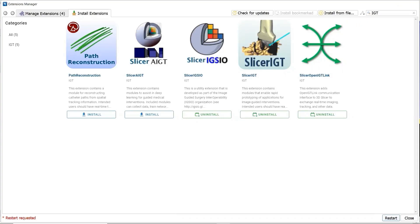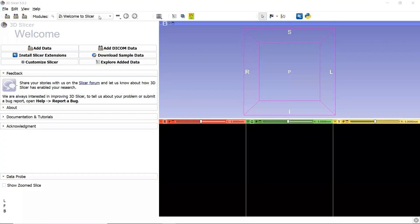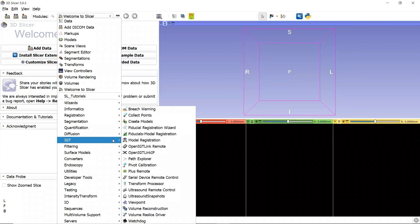Then we click Restart. Click OK. Now if we go to the module selection, we should see a category called IGT, which contains some ultrasound related extensions.